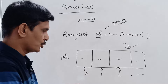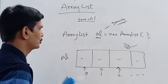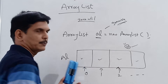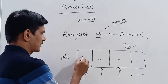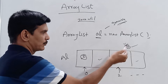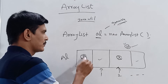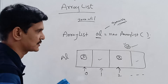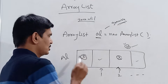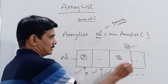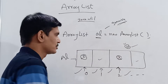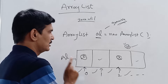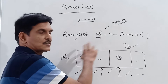In an ArrayList we can store a group of elements as a single entity where insertion order is preserved and duplicate objects are allowed. If you store an element like X, the same value can be repeated multiple times. In whichever order we inserted the elements, they are maintained in that same order. These are the two important behaviors: duplicates are allowed and insertion order is preserved.